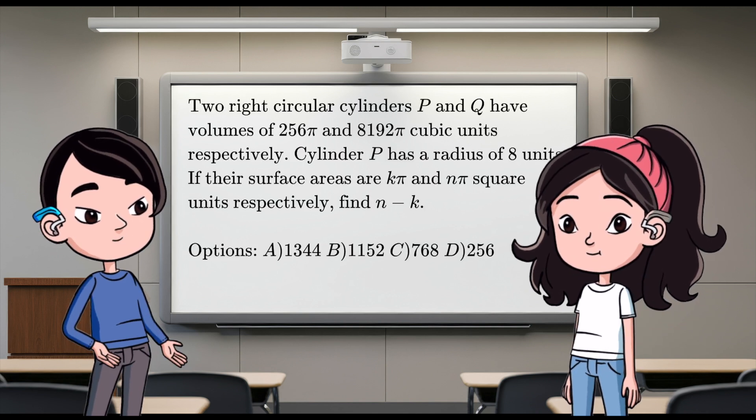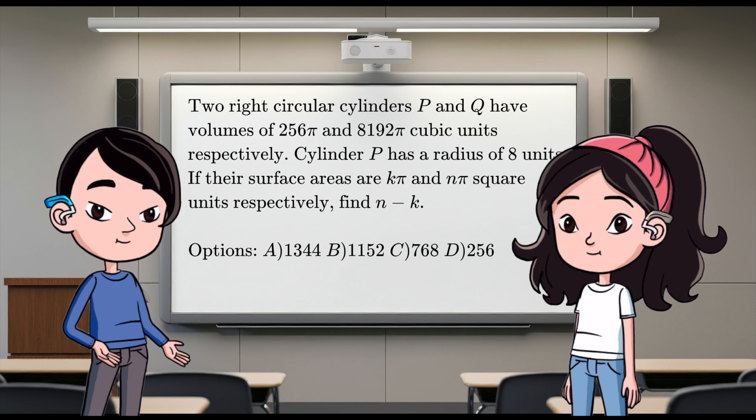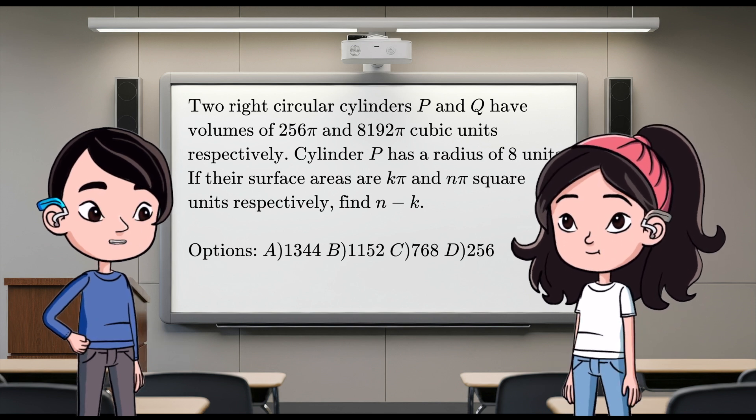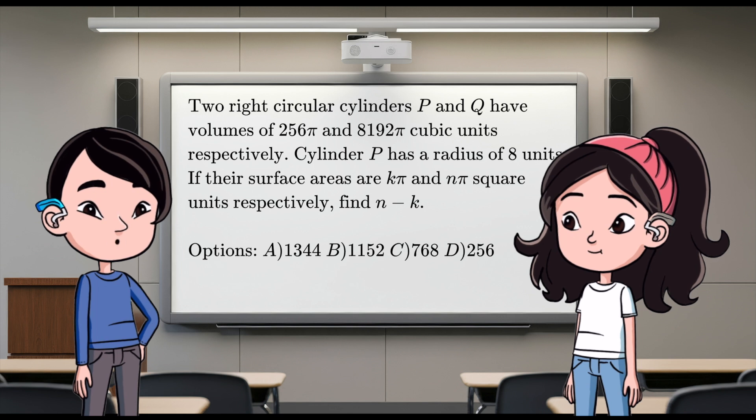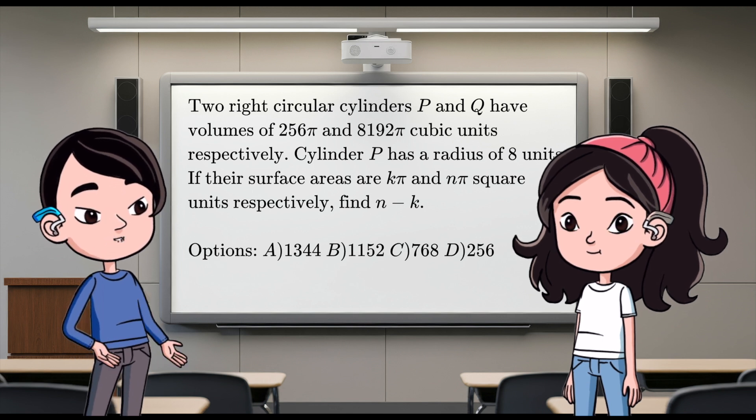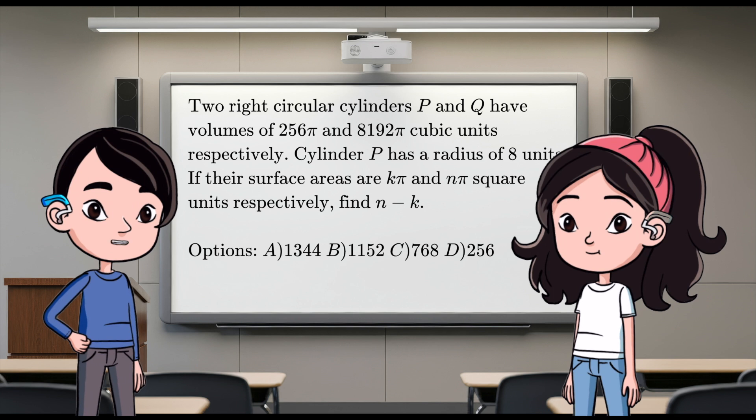Let's get it. Alright, so we've got this problem about two right circular cylinders. Let's call them cylinder P and cylinder Q. Got it. Cylinder P has a volume of 256π cubic units and a radius of 8 units. Cylinder Q has a volume of 8,192π cubic units.